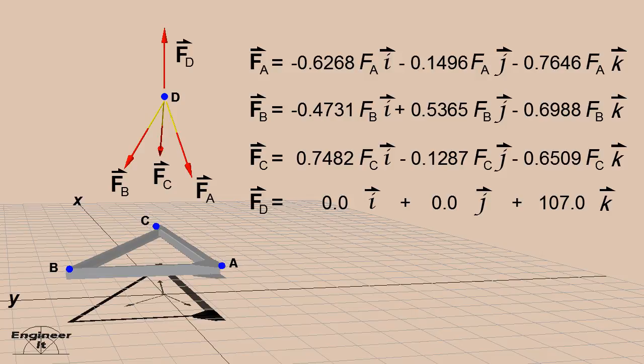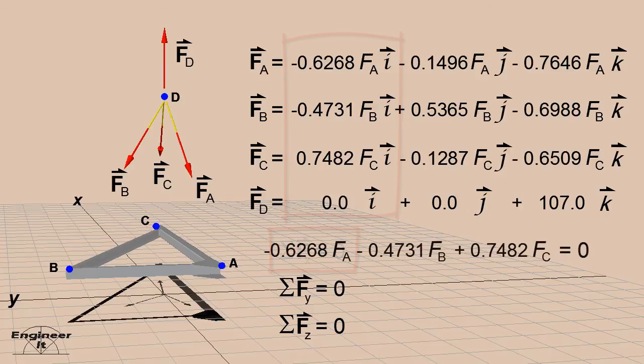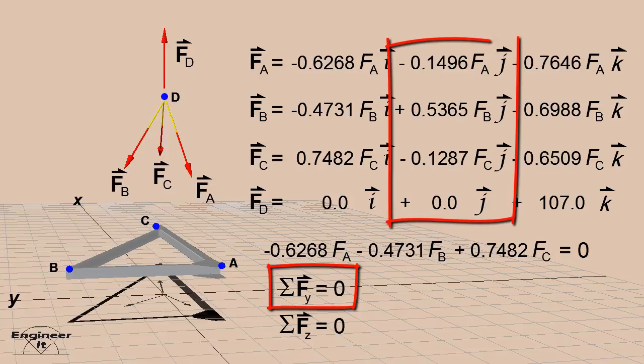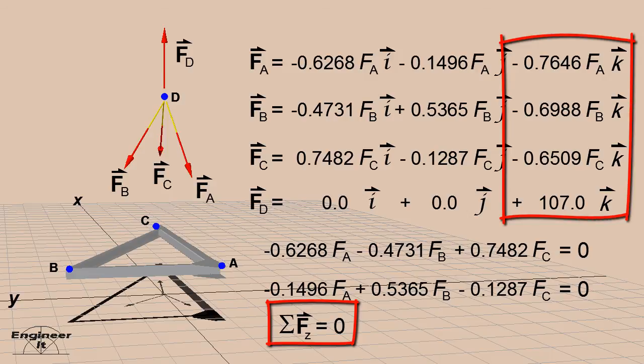Now that we have vector components, apply the equations of equilibrium. The sum of the forces in the x-direction is the sum of the i-components. The sum of the forces in the y-direction is the sum of the j-components. And the sum of the forces in the z-direction is the sum of the k-components.